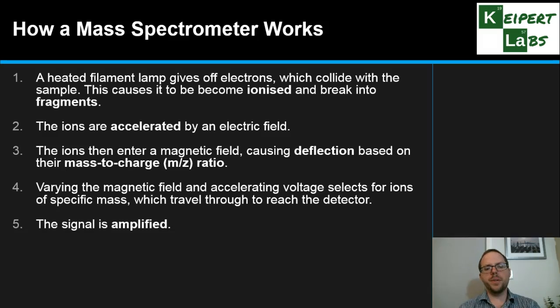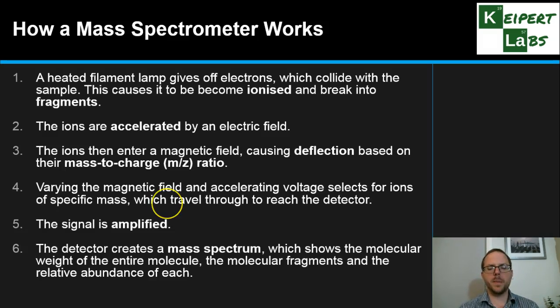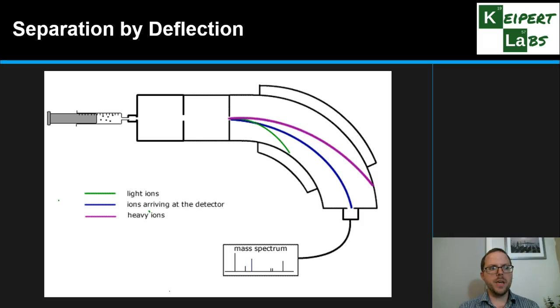The signal from what hits the detector is then amplified so we can detect very trace amounts in a way that's easy to identify. What it produces is called a mass spectrum, where we've looked at the signal from a whole sequence of different masses in order. This gives us useful information about the molecular weight of the whole unfragmented molecule, the fragments it breaks up into, and the relative abundance of each by the size of the peaks on the mass spectrum.